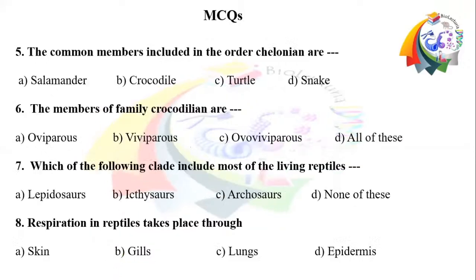Question number 5: The common members included in the order Chelonia are. Option A: salamander. Option B: crocodile. Option C: turtle. Option D: snake. Question number 6: The members of family Crocodilidae are. Option A: oviparous. Option B: ovoviviparous. Option C: viviparous. Option D: all of these.